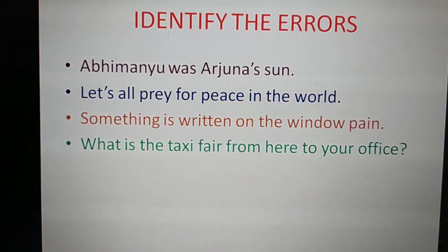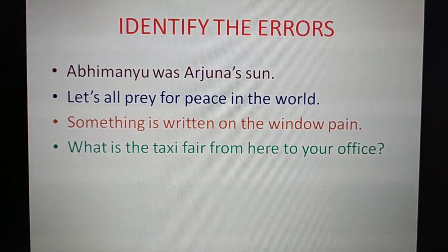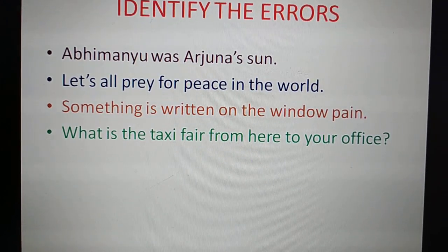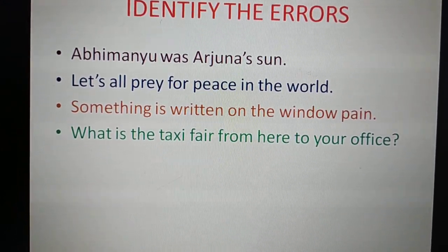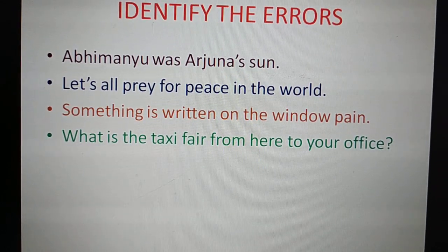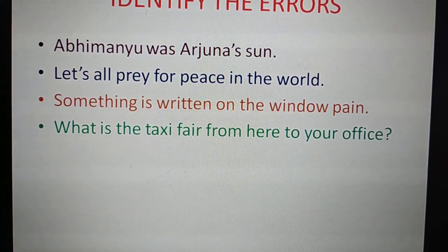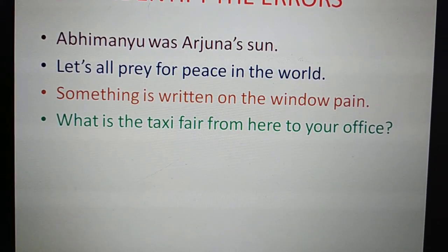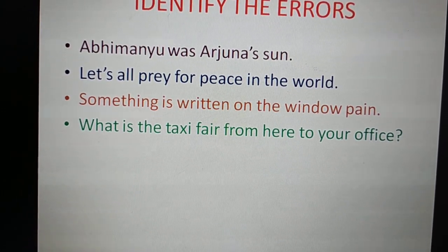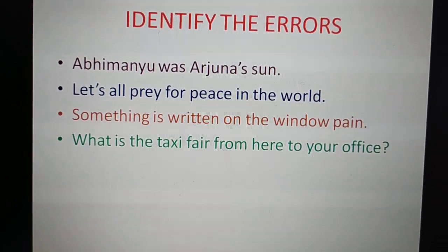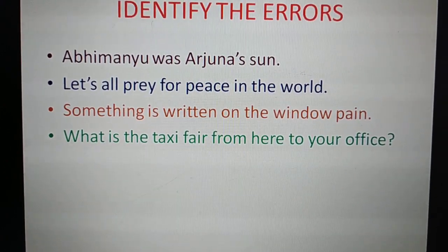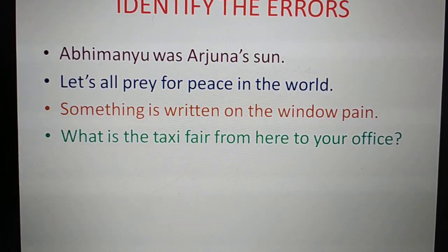Now we have certain sentences. Please look at them carefully and identify the errors. Abhimanyu was Arjun's son. Let's all pray for peace in the world. Something is written on the window pane. And what is the taxi fare from here to your office? When I am reading these sentences, you will feel that all these sentences have no errors. But look at the words and then you will be able to identify the errors.